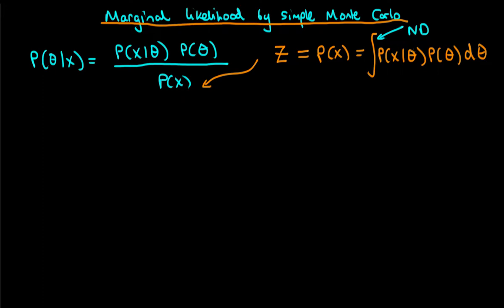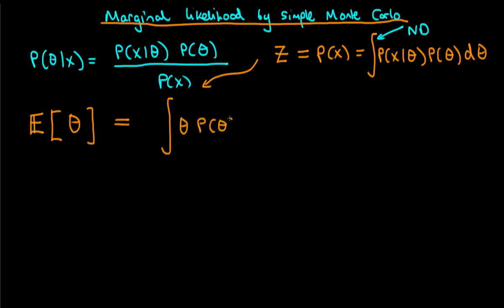So what can we do? I want to take a bit of a sidestep and think about how would I work out the expected value of our parameter theta. Let's imagine that theta is unidimensional for argument's sake. Well, what you would do is you would integrate the product of theta times P of theta d theta, where P of theta is some given density. This would be the expectation of theta under the density P — P here could stand for our prior density, for example.